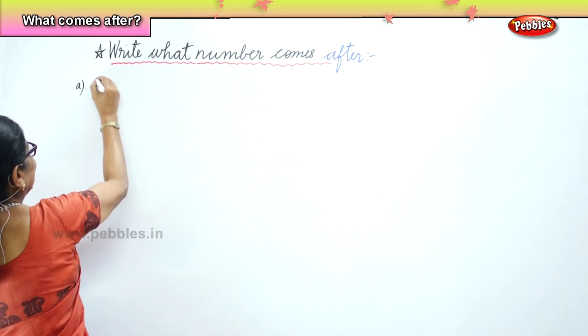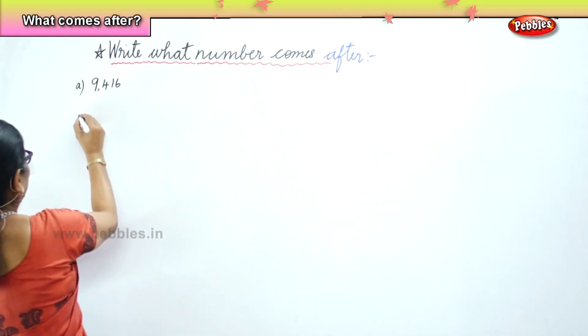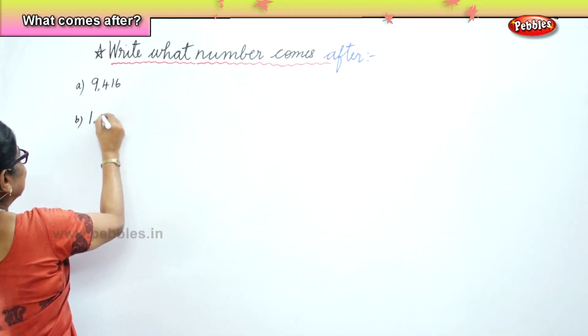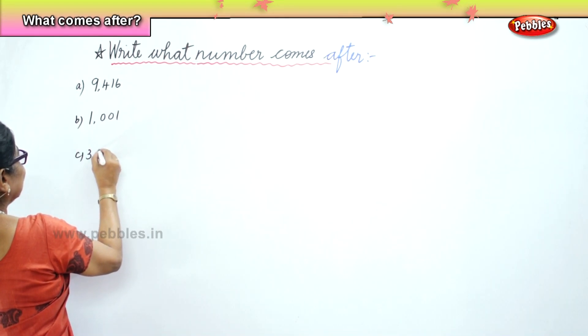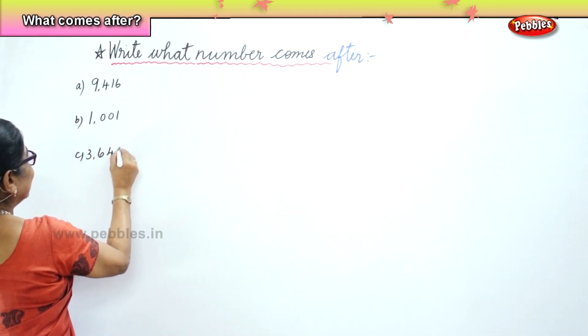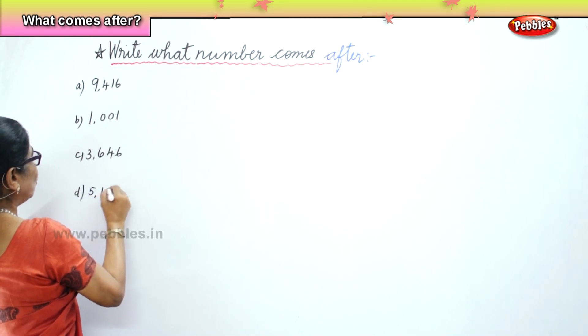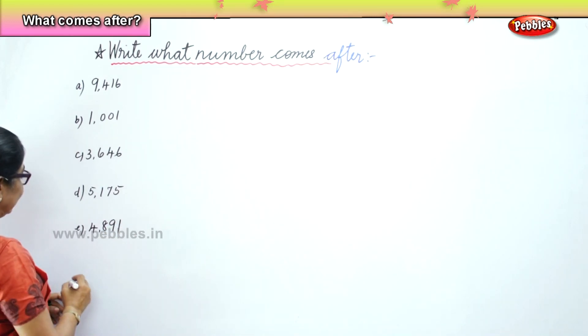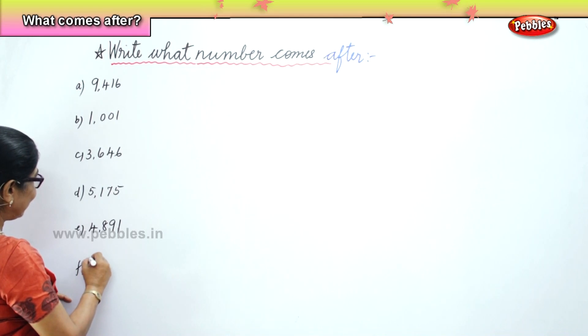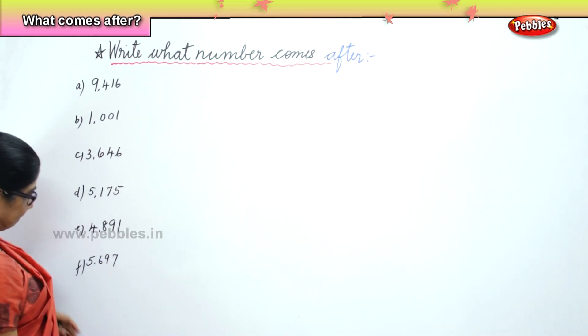Now A. 9,416, then 1,001, 3,646, 5,175, 4,891, 5,697. Okay?